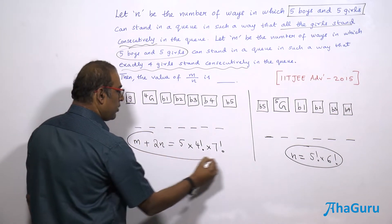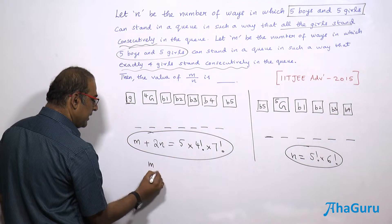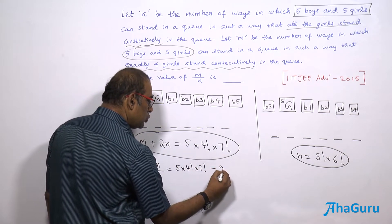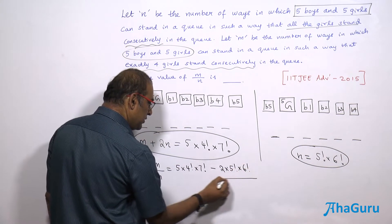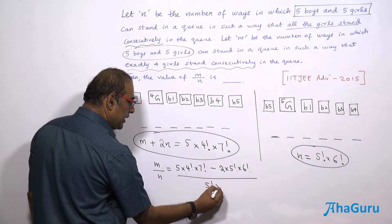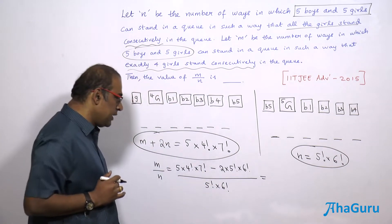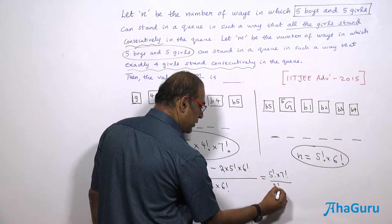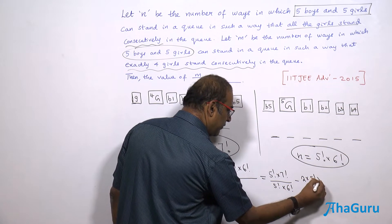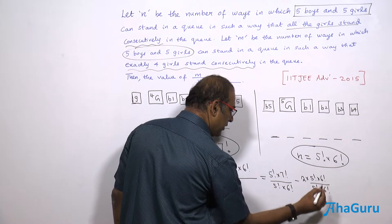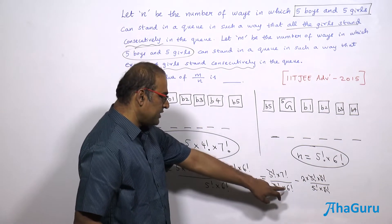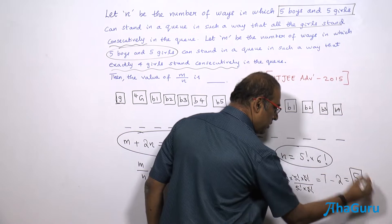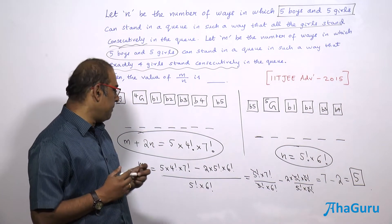Therefore M = 5 × 4! × 7! − 2N = 5 × 4! × 7! − 2 × 5! × 6!. So M by N equals (5 × 4! × 7! − 2 × 5! × 6!) divided by (5! × 6!). Simplifying: 5 factorial cancels, giving 7!/6! − 2 = 7 − 2 = 5. Therefore M by N equals 5.